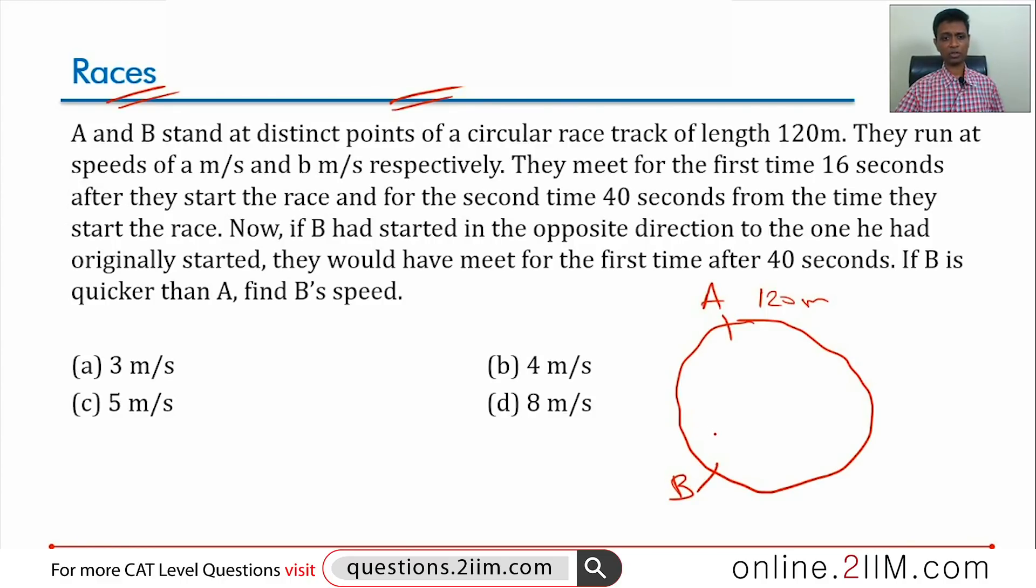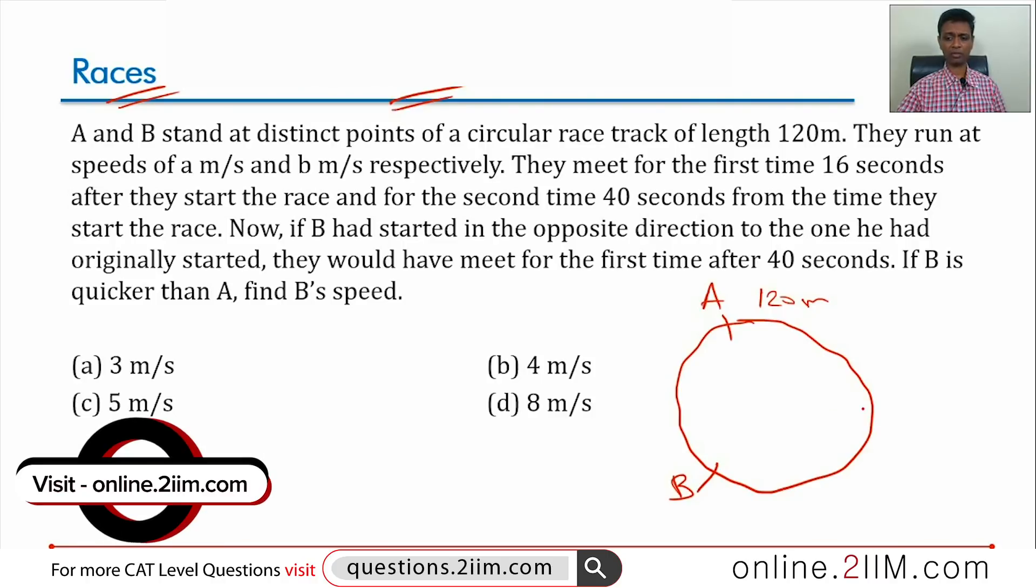They run at speeds of A and B meters per second respectively. They meet for the first time 16 seconds after they start the race and for the second time 40 seconds from the time they start the race. Note one thing here: we have not been told whether they are running in the same direction or in opposite directions. They meet after 16 seconds and then they meet after 40 seconds, second time.